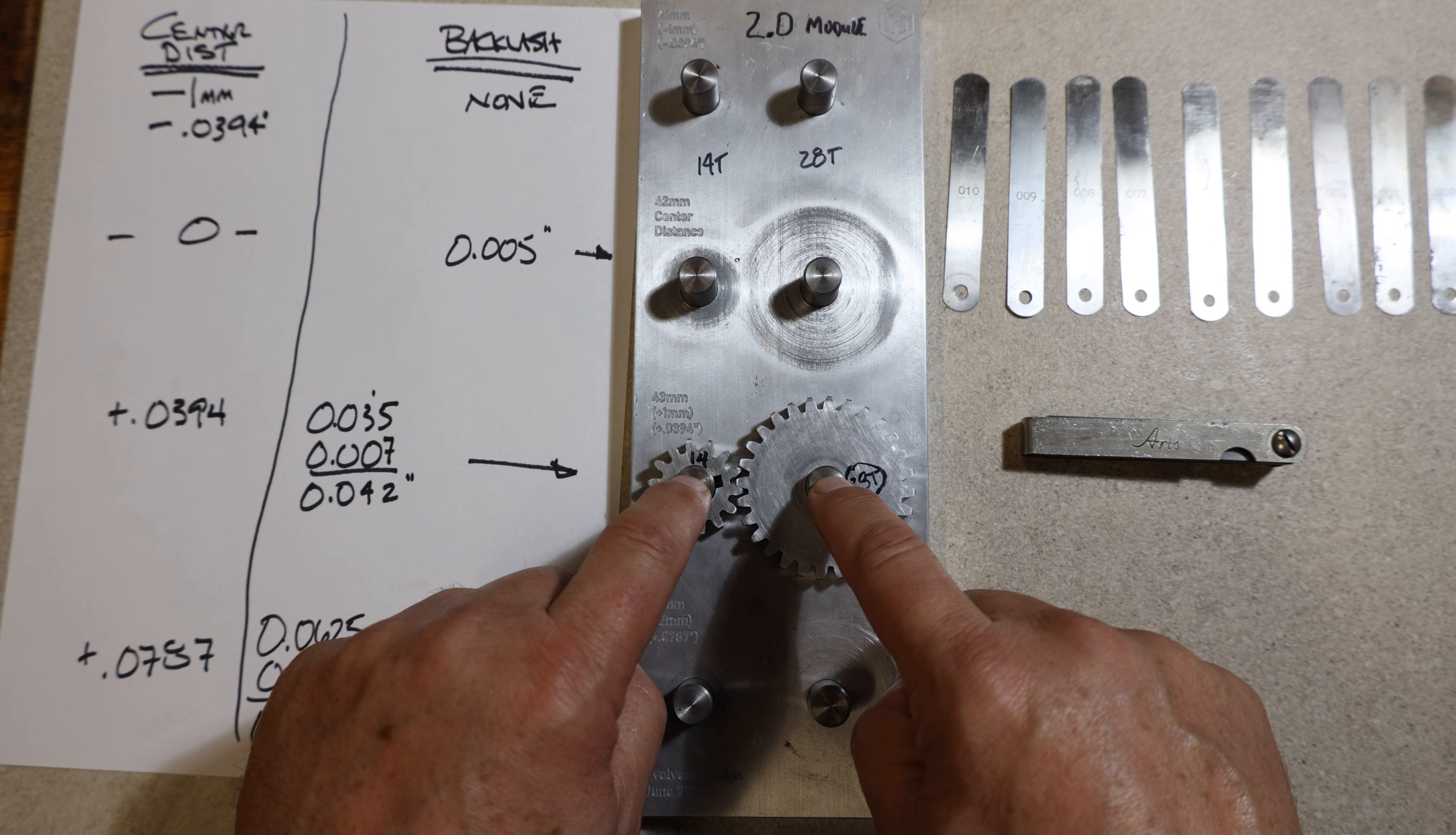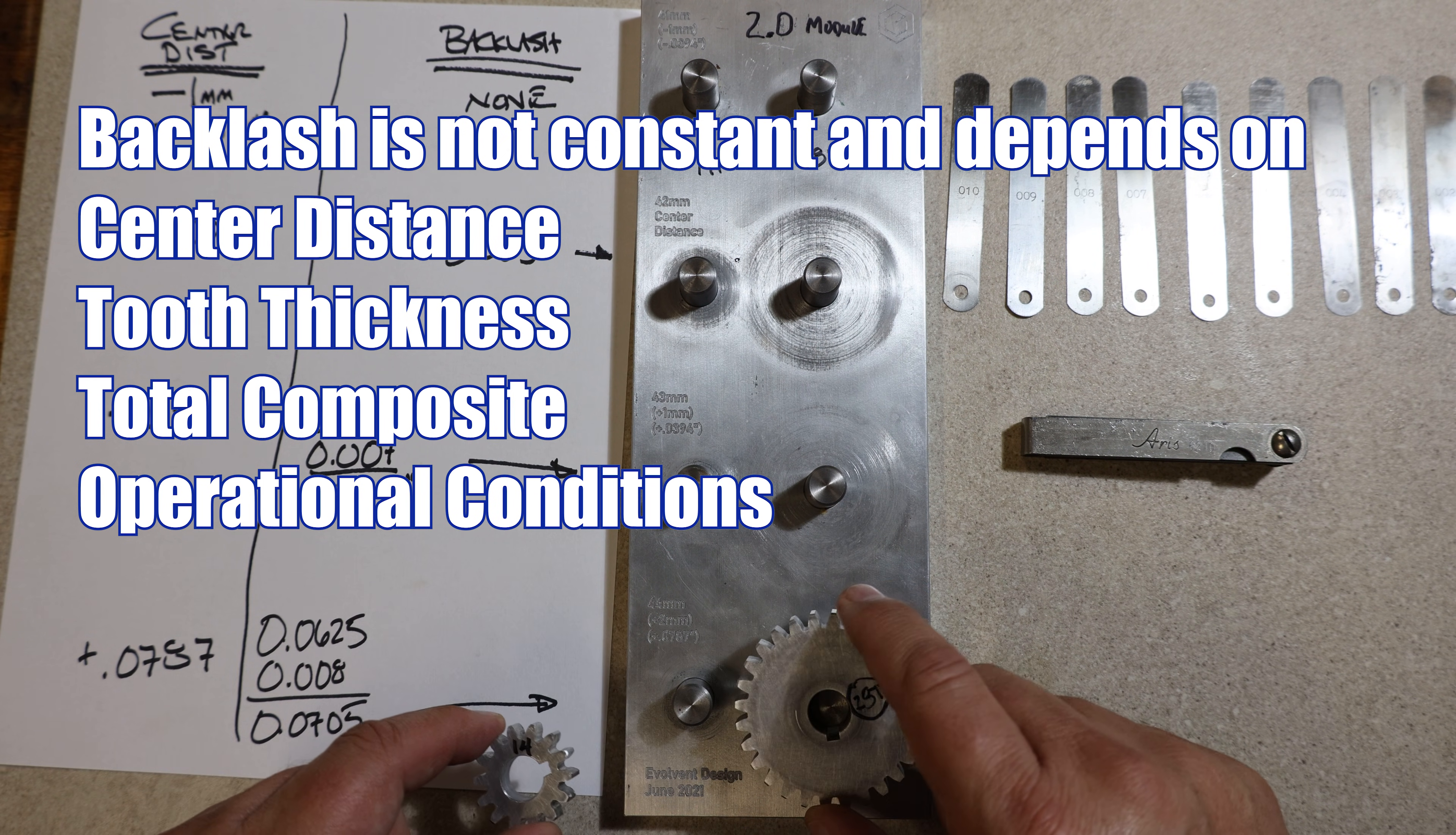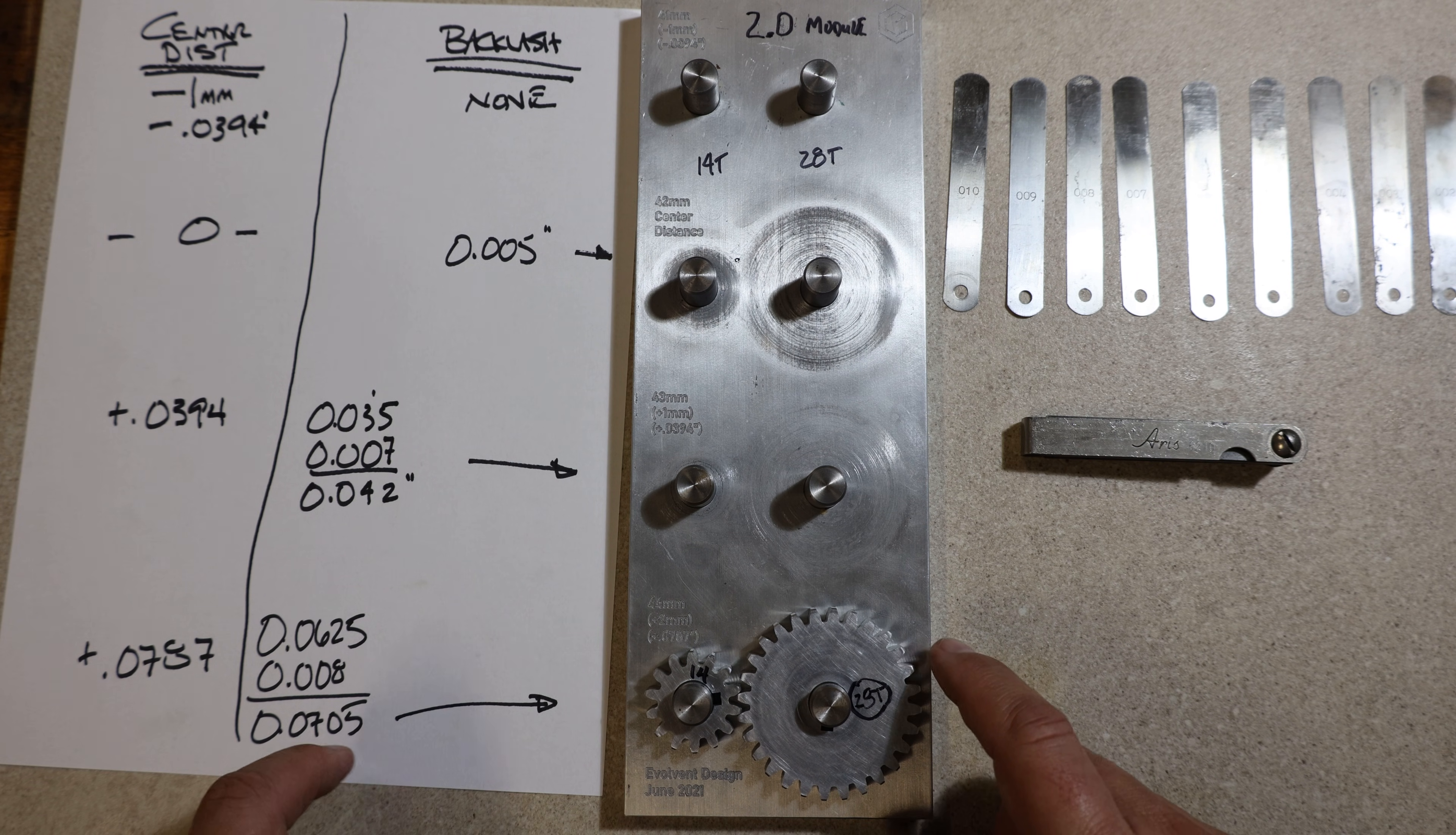These two pins or shafts are an extra 39 thousandths apart this way and there's a lot of backlash. And here they are 78 thousandths apart and there's nearly 70 thousandths of backlash.